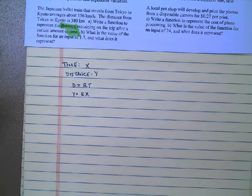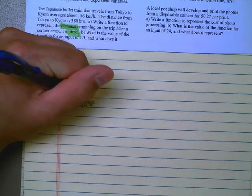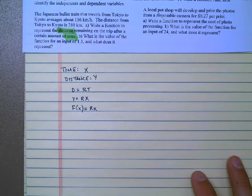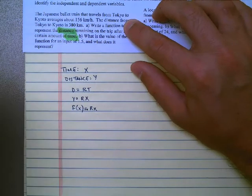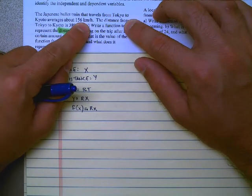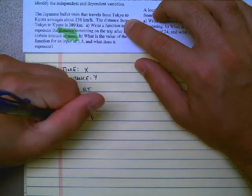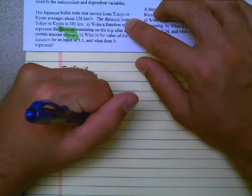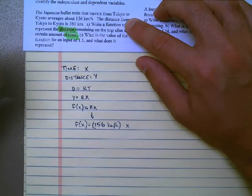If we want to do this in function notation, we're going to say that f of x is equal to our speed times our x value. Now let's make it specific for our problem. The train averages about 156 kilometers per hour. So we can take this 156 and replace the rate. f of x is equal to 156 kilometers per hour times the time, which is x.